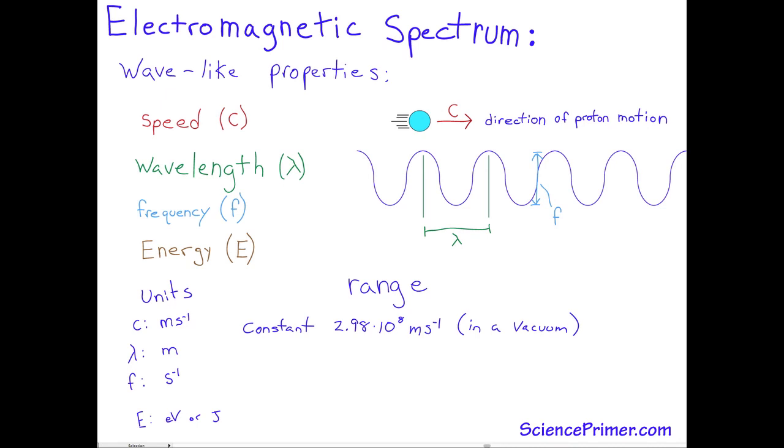The speed of electromagnetic radiation does not vary. In a vacuum, photons travel at the constant speed of 3 times 10 to the 8 meters per second.